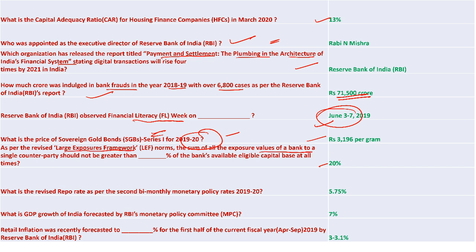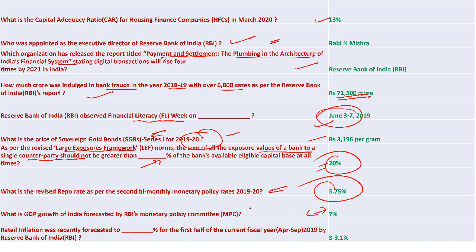As per the revised Large Exposure Framework, the sum of all exposure values of a bank to a single counterparty should not exceed 20% of the bank's available eligible capital base at all times. The repo rate was revised to 5.75% as per the second bi-monthly monetary policy. RBI forecasted GDP growth rate at 7%. Retail inflation was recently forecasted at 3.1% for the first half of the current fiscal by RBI.